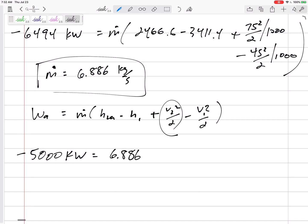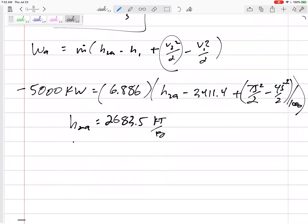The work actual was negative 5000 kilowatts. M dot is 6.886 kilograms per second times (h2a minus 3411.4 plus 75 squared over 2 minus 45 squared over 2 divided by a thousand). To get h2 actual: 2683.5 kilojoules per kilogram.